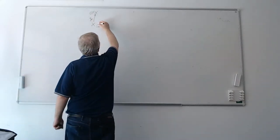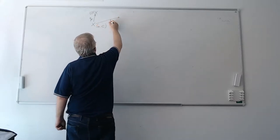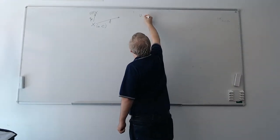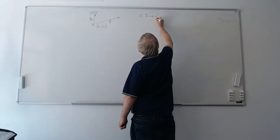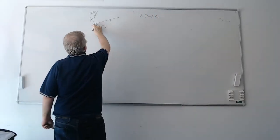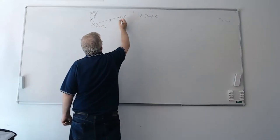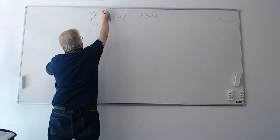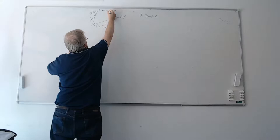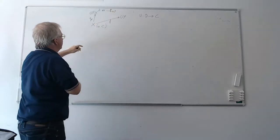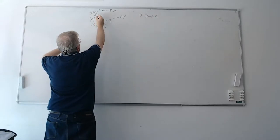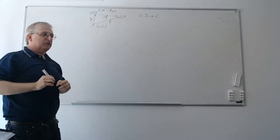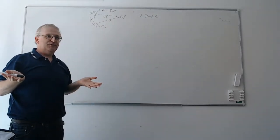The property is that whenever you take any morphism f₂ — and I forgot to say, you have a forgetful functor from D to C — so when you have any morphism in C from x to U y, then there is a unique arrow from F of x to y called f-hat, such that if you apply the U functor to f-hat, that diagram commutes.